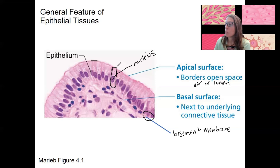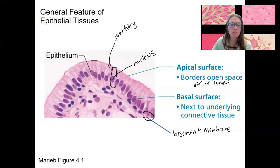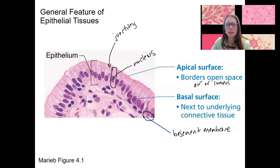We also need a way to connect cells next to each other, so we'll come back to types of junctions that link two different epithelial cells. And we've talked about the cell shapes already — those are the general features.